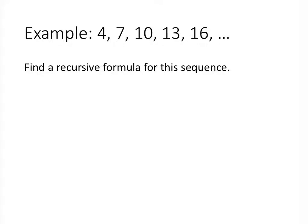The first thing we're asked for is a recursive formula for this sequence. When we're thinking about the recursive definition, we're thinking about how do we get the next number in the sequence based on the numbers that came before it. Typically in these problems, the relationship is that we're adding something at each step. To get from 4 to 7, we add 3. To get from 7 to 10, we add 3. From 10 to 13, we add 3. From 13 to 16, we add 3. We see a consistent pattern, and so we've identified the relationship that defines this sequence.